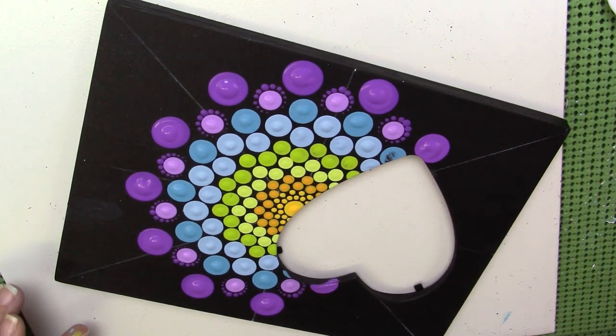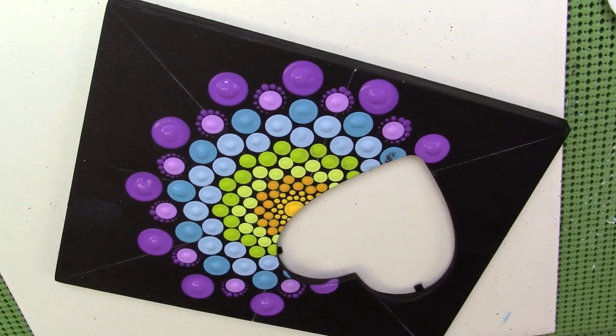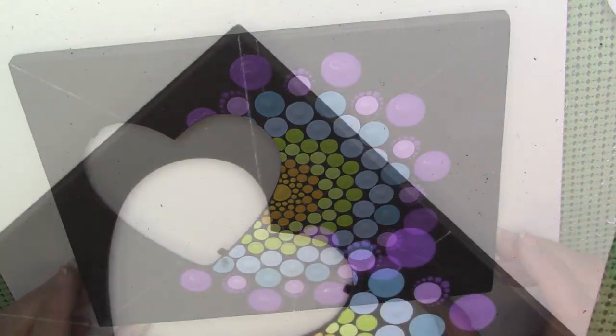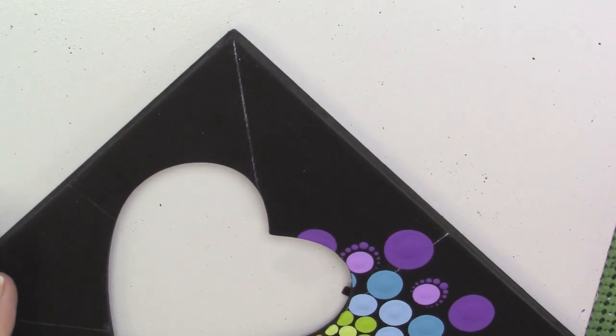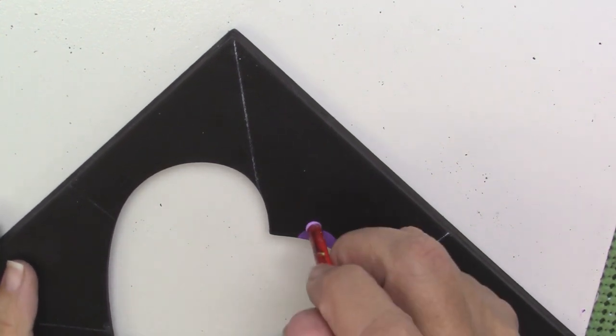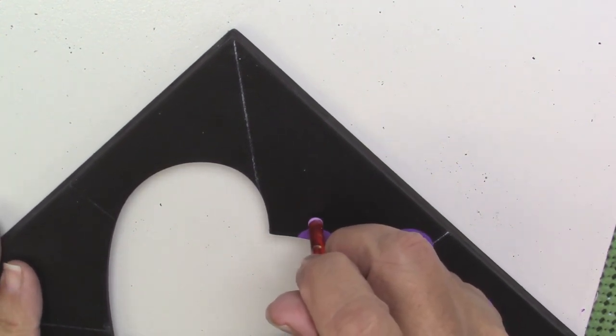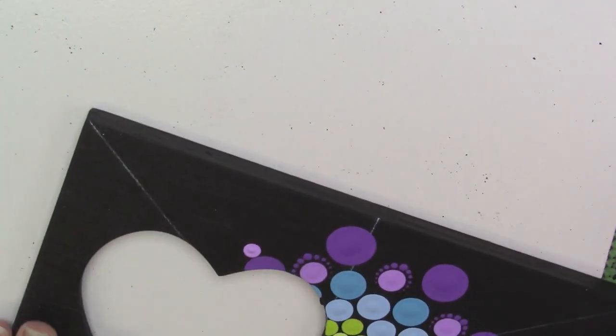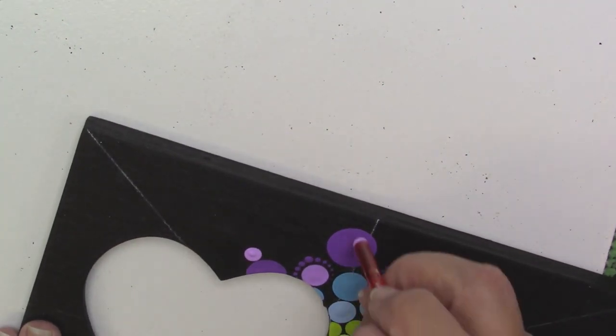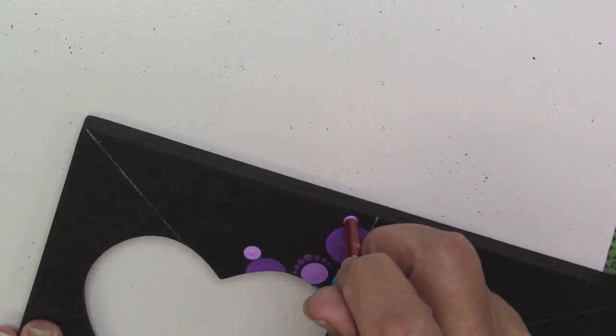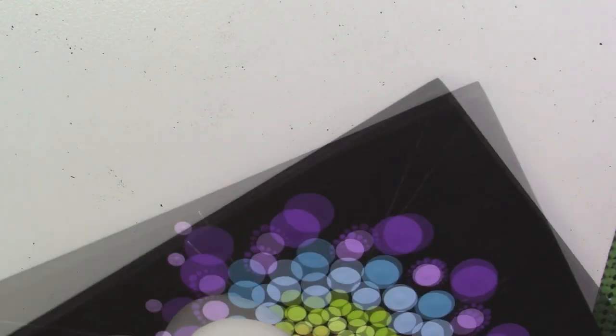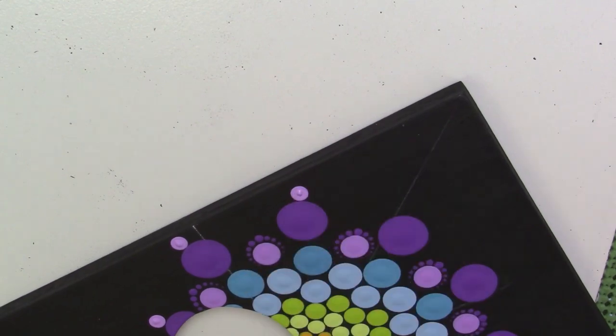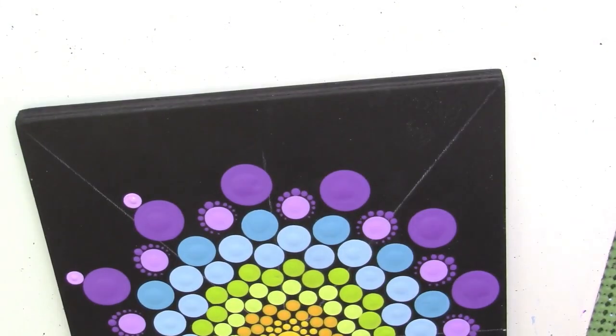I'm going to go ahead and let that dry just because it was a little dangerous for me to walk the dots while it was wet. I'm going in with my H hook and putting the center dot and I'm using the lighter titanium white and purple pizzazz mix that I made and putting the larger dot right above that largest dot there.